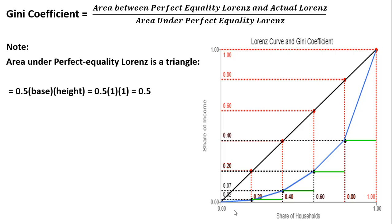So 0.5 times the base of the triangle goes from zero to one, so it's one, and the height of the triangle, same thing, goes from zero to one. We'll get an answer of 0.5, and it'll always be 0.5. So this denominator in our calculation will always be 0.5.